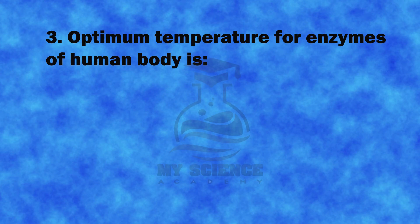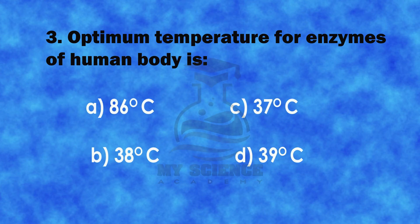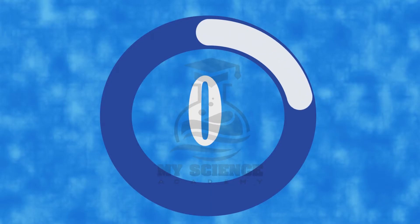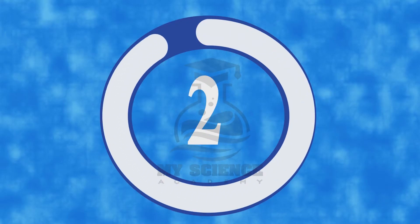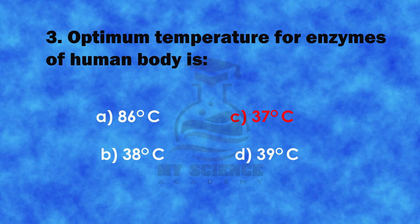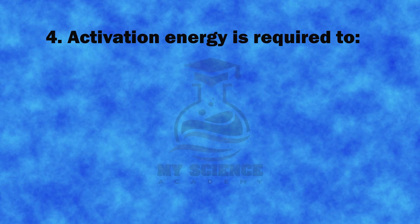Question 3: Optimum temperature for enzymes of the human body is: A. 86, B. 38 degrees C, C. 37 degrees C, or D. 39 degrees C. The correct answer is C. 37 degrees C.